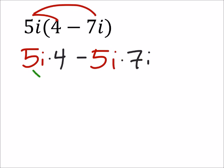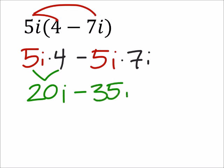So this first term here would give me 20i. And then I would have minus, 5 times 7 is 35. Then I would have i times i, which is i squared. But i squared is the same thing as negative 1.